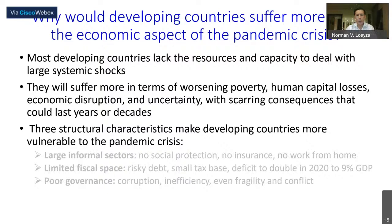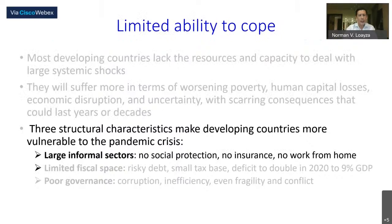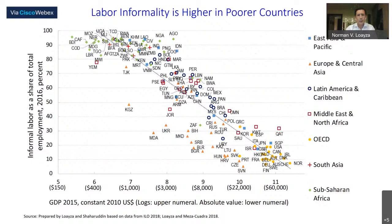There are three structural characteristics that make developing countries more vulnerable to the pandemic crisis. The first is that they have large informal sectors. For the median developing country, the informal sector is about 70 percent of employment. These workers have no social protection, no insurance, and almost none of them have the ability to work from home.